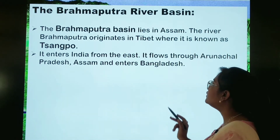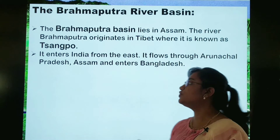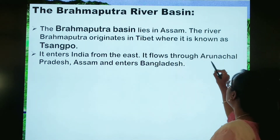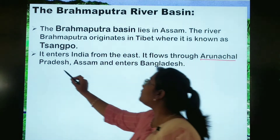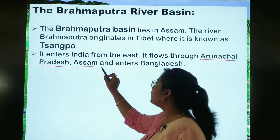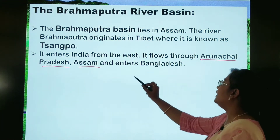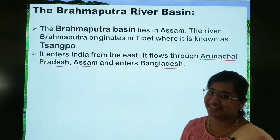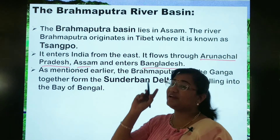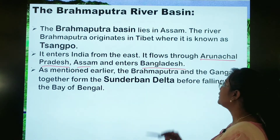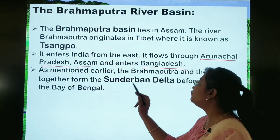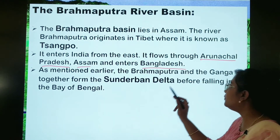It flows through Arunachal Pradesh, then Assam, and then enters Bangladesh. Dear children, mark this point. As mentioned earlier, the Brahmaputra and the Ganga together form the Sundarban delta.